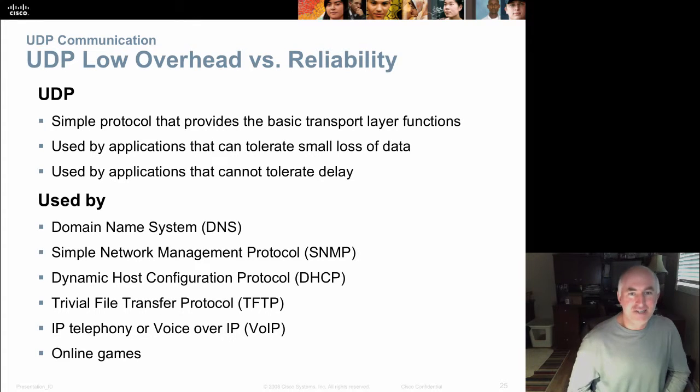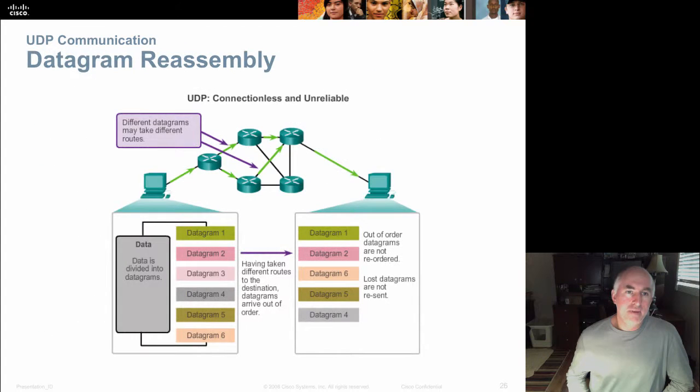UDP, much easier to understand, no three-way handshakes, no session establishment. It's connectionless, so it doesn't need to talk to the other end. It just throws the segments out on the wire and hopes they make it there. It has no way to know if they ever made it there because there's no acknowledgements and it has no mechanism for resending. So UDP is connectionless and unreliable. Also has no way to resequence the data. So if things arrive out of order as shown here, there's no method to put them back in the right order.